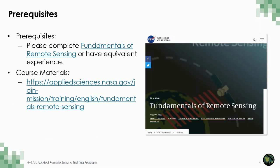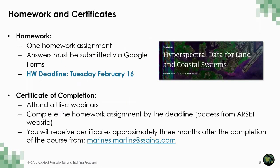There is only one prerequisite for this training: an understanding of the basics of remote sensing, with our course on those concepts listed here. You can find the lecture materials, a link to watch the session recordings after the live sessions, and eventually a link to the homework. We will have one homework assignment. The link will be made available during the last session and will be due on Tuesday, February 16th. The homework will be completed via Google Forms and submitted online. If you attend all the sessions and complete the homework by the deadline, you will receive a certificate of completion. Please be patient as it does take a few months to complete these certificates and send them to all of our participants.